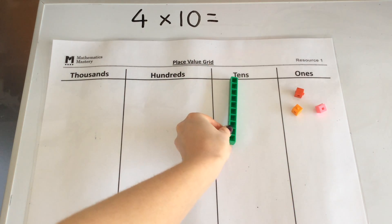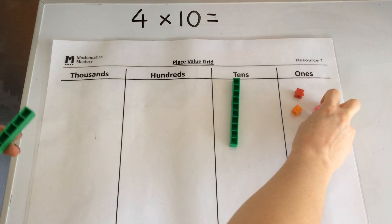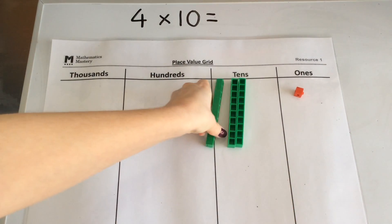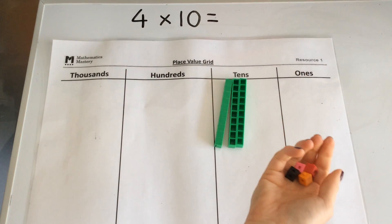1 ten times greater is 10, another 1 ten times greater is 10, another 1 ten times greater is 10, and another 1 ten times greater is 10.